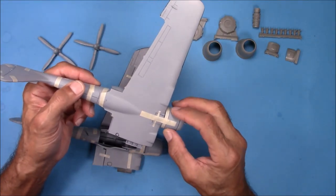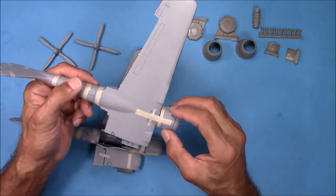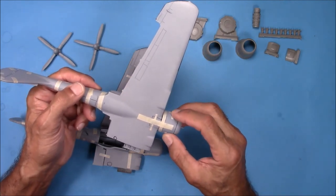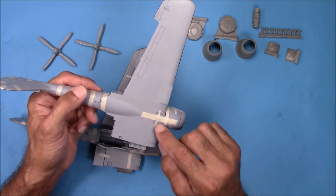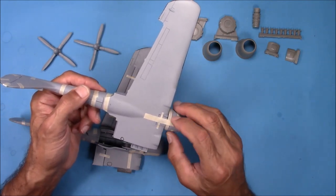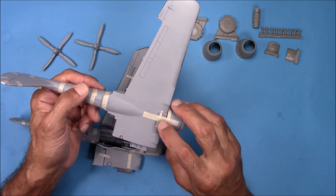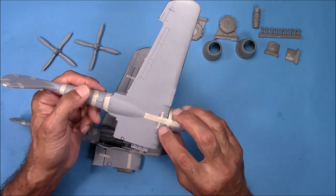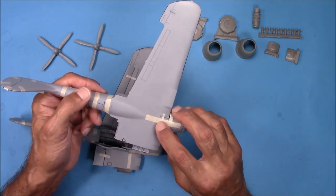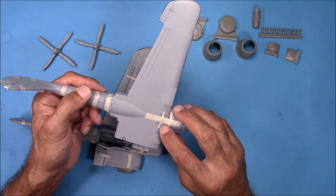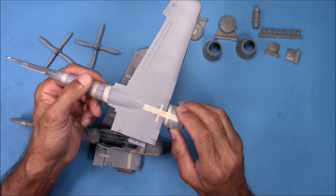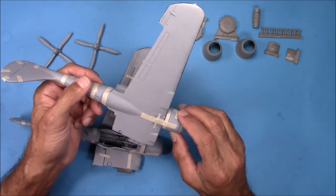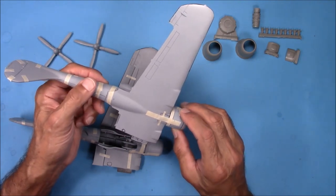This forward cowling cover, which is separate to display the engine, it fits pretty good on here. You're going to have to do a little bit of work if you decide you want to glue it in place. This one back here, the same thing. I think that if you position it tightly and then run some white glue around that seam line that you clean up with a Q-tip, a few applications will fill that area there and make it look a lot better.